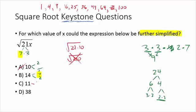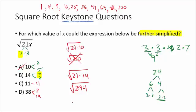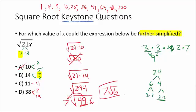Continuing to check: eleven is already prime, nothing matches. Thirty-eight is nineteen times two, no matching factors. So fourteen is our answer. To verify: the square root of 21 times 14 is the square root of 294. We know 49 goes in since we found a seven and a seven. Taking out 49 leaves us with six, giving us seven root six. The only answer that further simplifies the expression is fourteen.